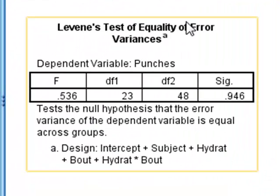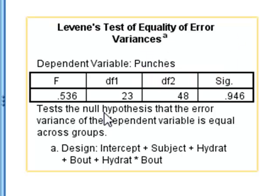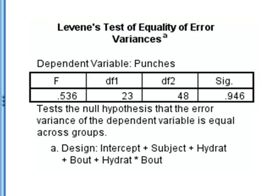We see in the output Levene's test for the equality of error variances, and we can see a p-value of 0.946, which shows that there is no significant difference from an equality of variance across the various conditions of the experiment. So this condition is satisfied.